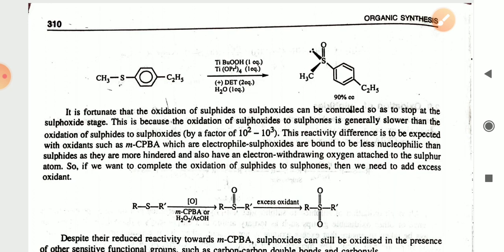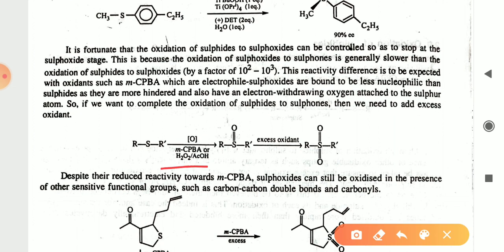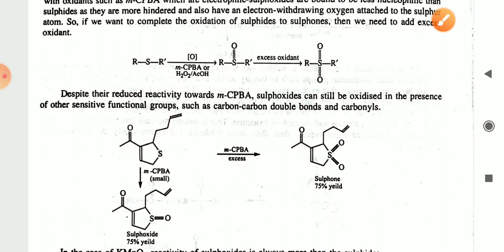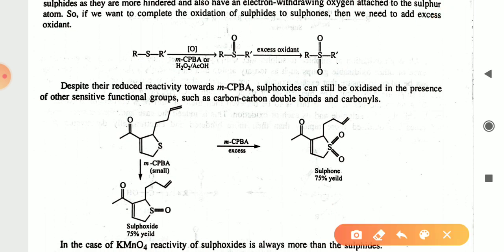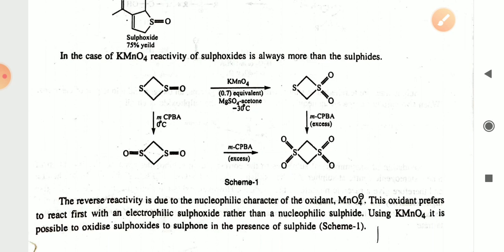In the presence of MCPBA or H₂O₂ you will get the sulfoxide, and in excess you will get the sulfone. Another example: if you use a small amount of MCPBA you will get the sulfoxide, but if you use it in excess you will get the sulfone. In the presence of KMnO₄ the oxidation of sulfoxide is always favored over that of sulfide.